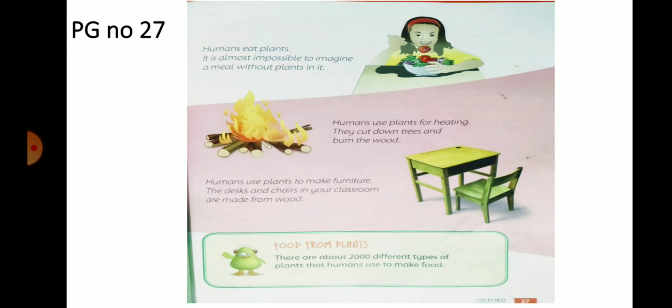Humans use plants for heating. They cut down trees and burn the wood. Humans plants ko heating ke liye bhi use karte hain. Darahtton ki lakdi kaatke unhe jalaya jata hai. Aur sardiyon mein heating ke liye istamal kiya jata hai.